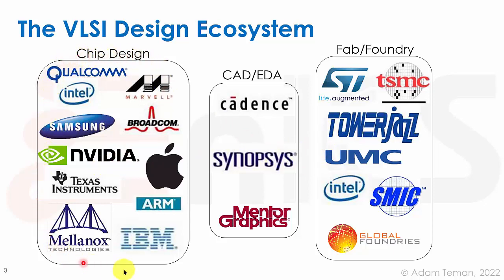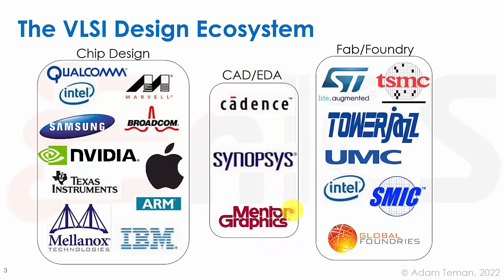Fabless companies design chips but do not have their own fab. Examples include ARM, Apple, Qualcomm, Marvell, and Broadcom — completely fabless. Samsung has its own fabs; IBM sold theirs to Global Foundries; Texas Instruments has some fabs but also uses TSMC and others. The big three CAD/EDA providers are Cadence, Synopsys, and Mentor Graphics — now Siemens. These dominate the market, though there are smaller providers.